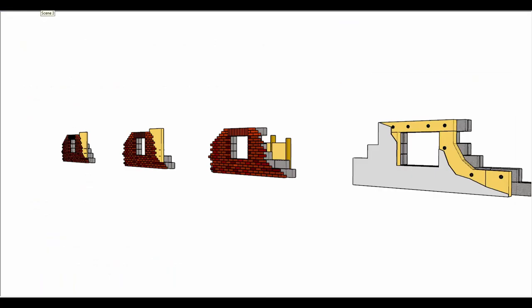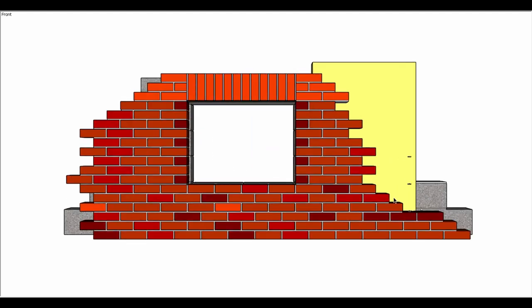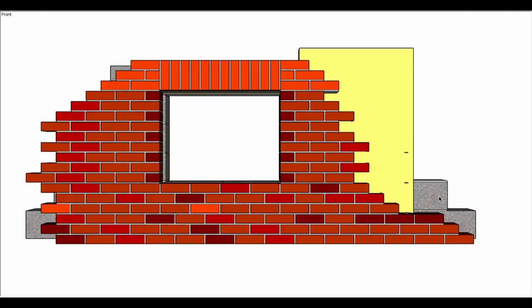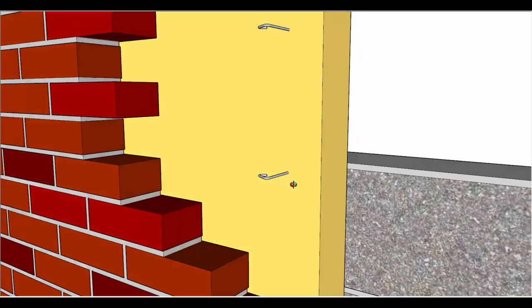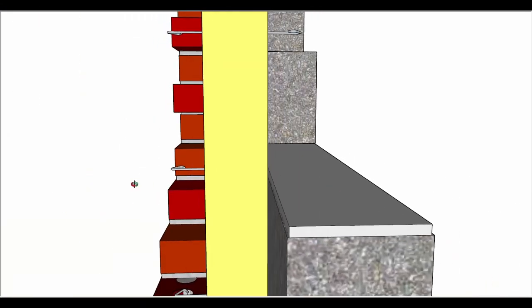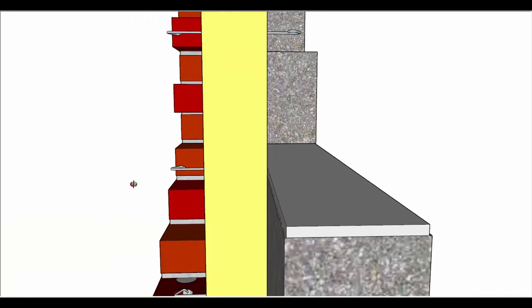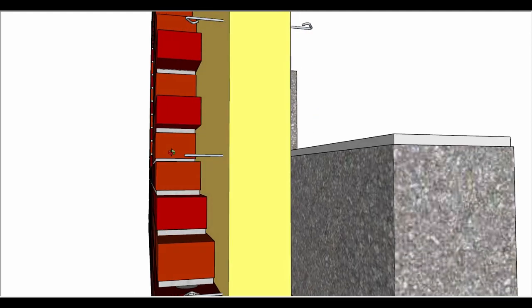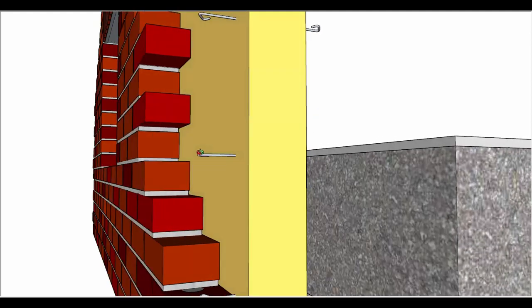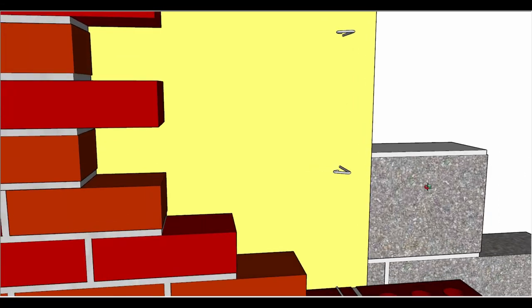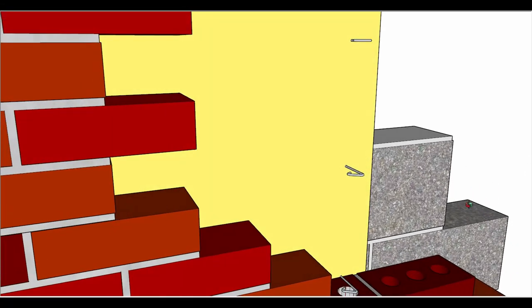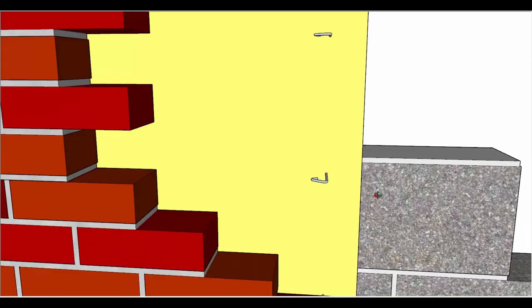The second option, again most usually found in new build construction, is a full fill cavity. In this option, the space between the two leaves of masonry is completely filled with insulation material. Wall ties are bedded in the masonry on each side of the wall, as per a normal cavity wall, and they pass through the insulation. There's no need for retaining clips in a fully filled cavity, as the insulation does not need to be held back.